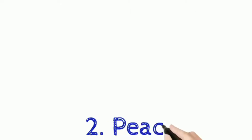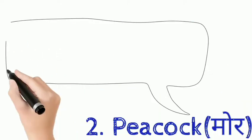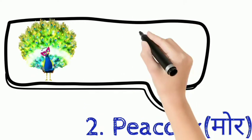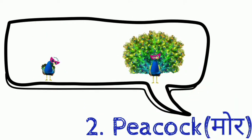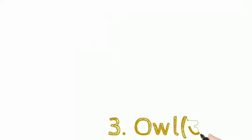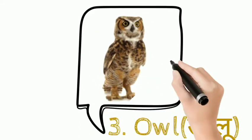Second: Peacock, P E A C O C K. Peacock means mor. Third: Owl, O W L. Owl means ullu.